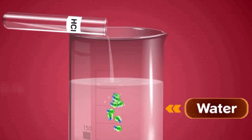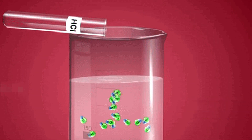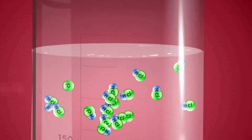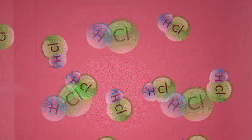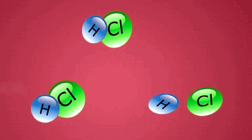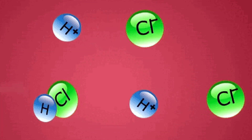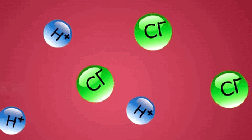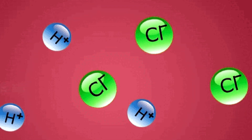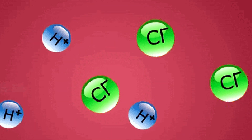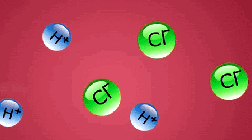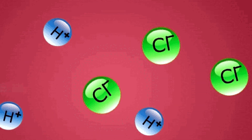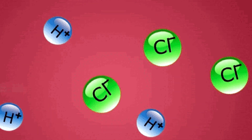For example, hydrochloric acid, when dissolved in water, will ionize and produce hydrogen ions. So, according to the definition of Arrhenius, HCl is considered an acid.